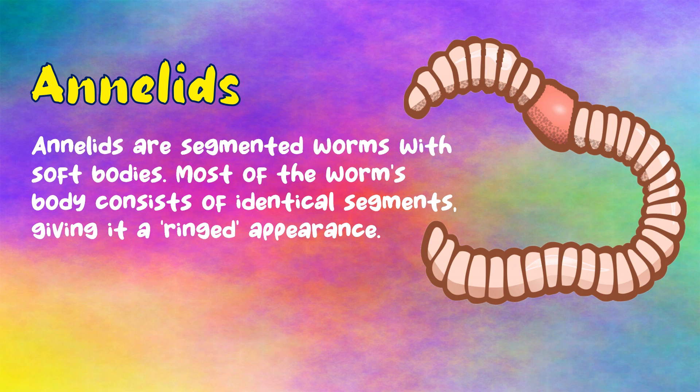Annelids are segmented worms with soft bodies. Most of the worm's body consists of identical segments, giving it a ringed appearance.